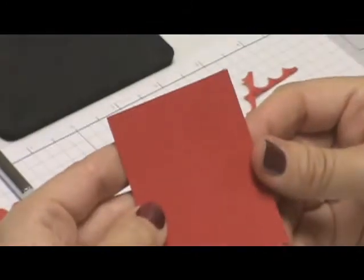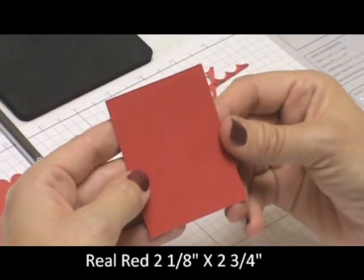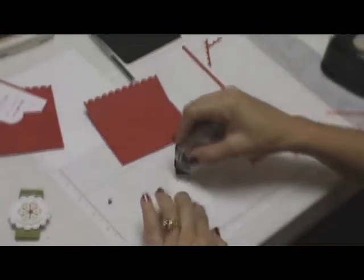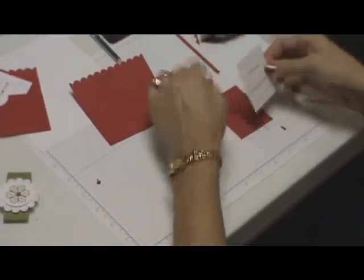Then I have a piece of real red cut 2 1/8" by 2 3/4", and I'm just going to mat that together.